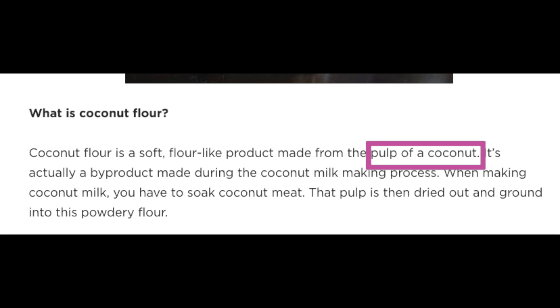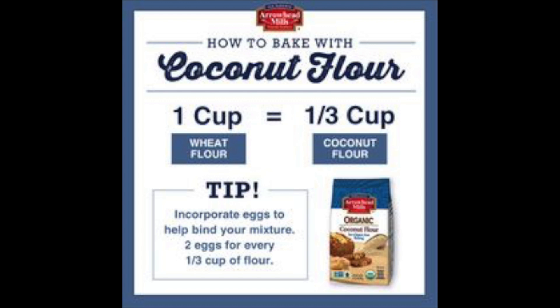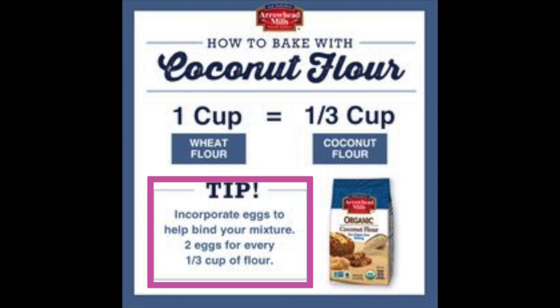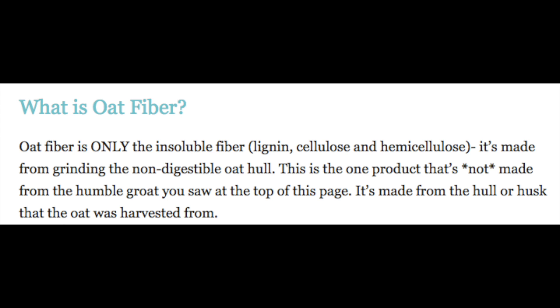Coconut flour is made from the pulp of coconut, ground very finely and fully dried out. A big thing to remember is you cannot sub coconut flour one-to-one for almond flour — it acts very differently in terms of absorbency. People recommend using three times the amount of wheat flour as per coconut flour, which also works for almond flour subs. So if you're using one cup of almond flour, you would sub in only one-third the amount of coconut flour. When you use it, make sure you add extra eggs to your recipe because coconut flour is so absorbent it needs that extra liquid, and the extra eggs will also counteract the crumbliness.